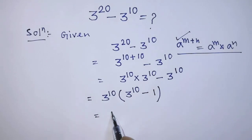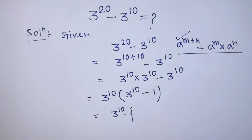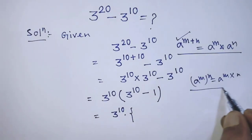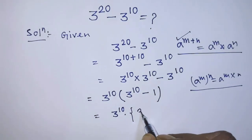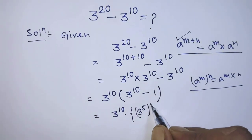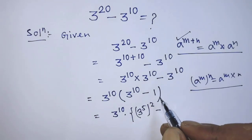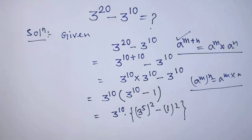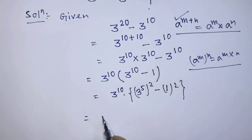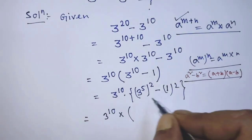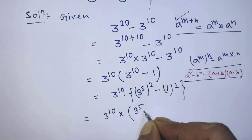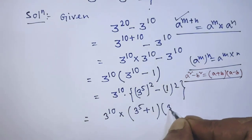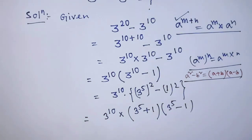After that, it will be 3 to the power 10 times — according to the difference of squares formula — 3 to the power 5, whole to the power 2, minus 1 to the power 2. Applying the formula a squared minus b squared equals a plus b times a minus b, it will be 3 to the power 10 times 3 to the power 5 plus 1, times 3 to the power 5 minus 1.